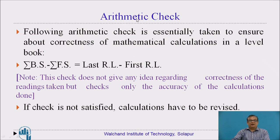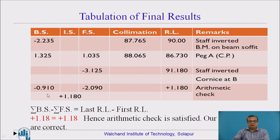Now let us see the arithmetic check, which tells us whether our calculations are correct or not. Remember, this arithmetic check only gives an idea about correctness of your calculations — it does not give any idea about correctness of your readings. The check is: Σ backsight − Σ foresight must equal last RL − first RL. If the check is not satisfied, revise the calculations. Here, the summation of all backsights minus summation of all foresights comes to +1.18, and last RL minus first RL also comes to +1.18. The equation is satisfied, meaning our calculations are correct.